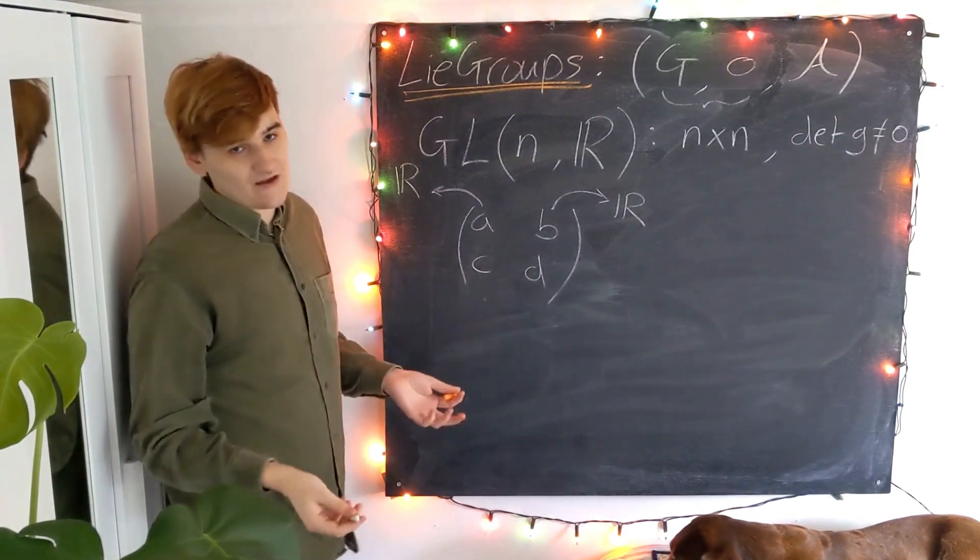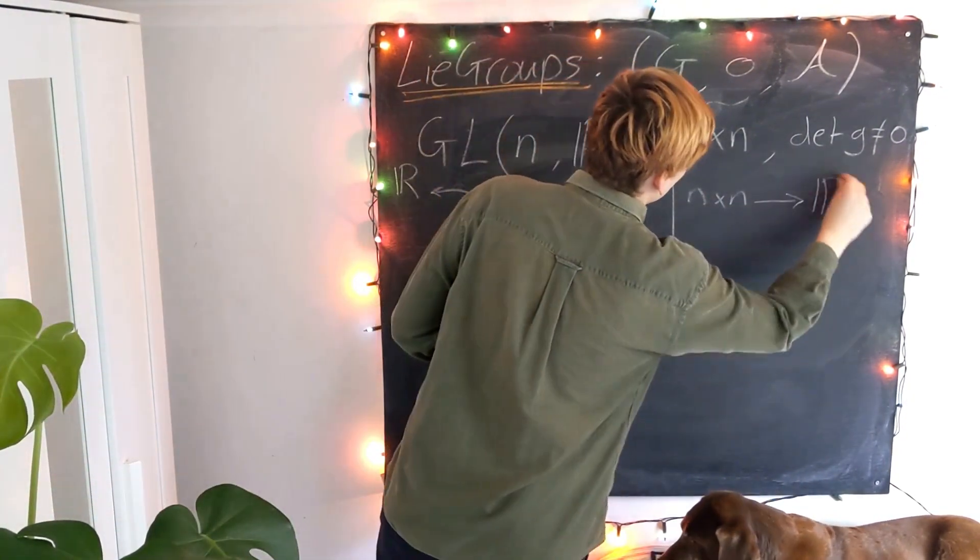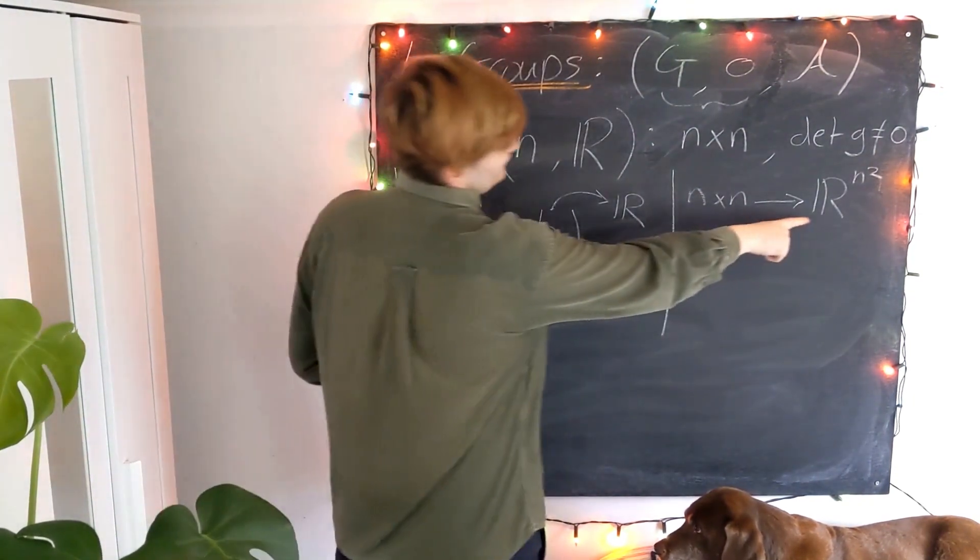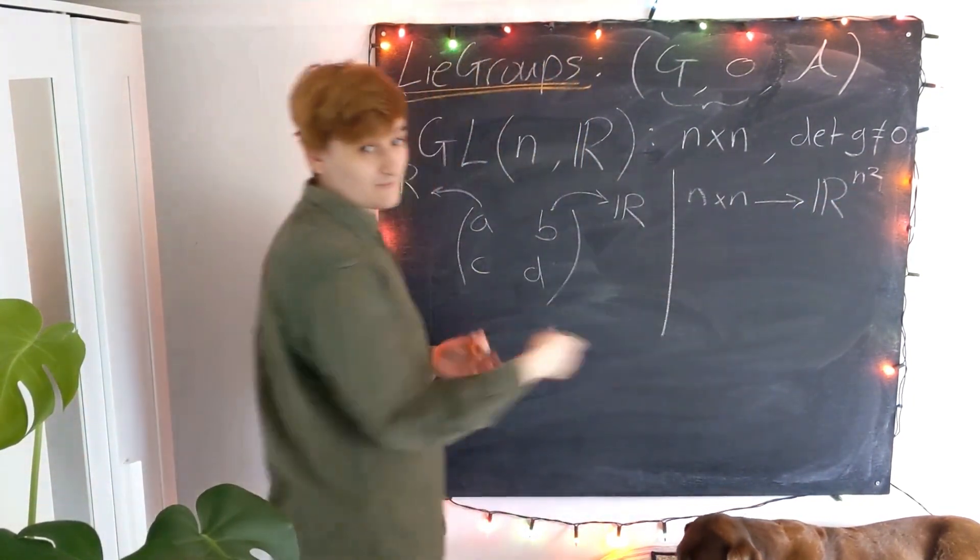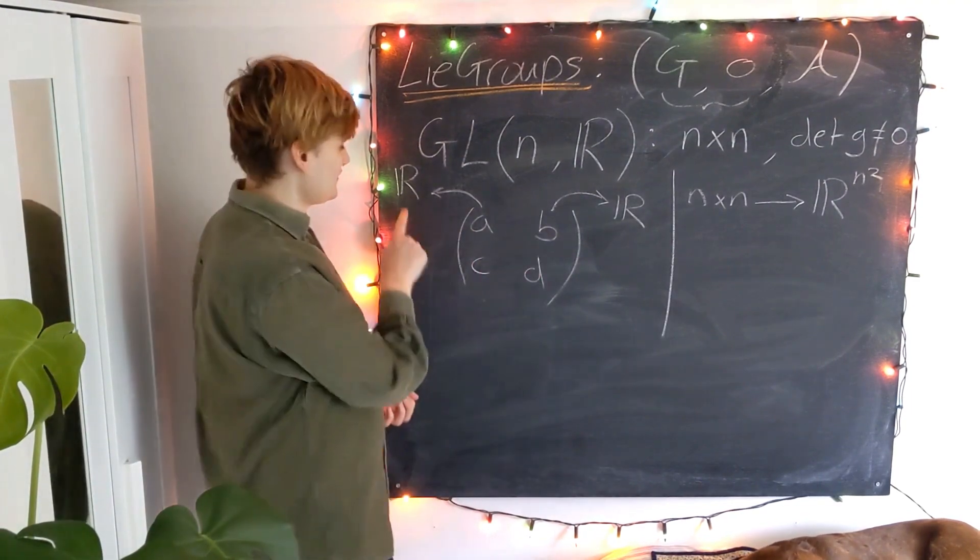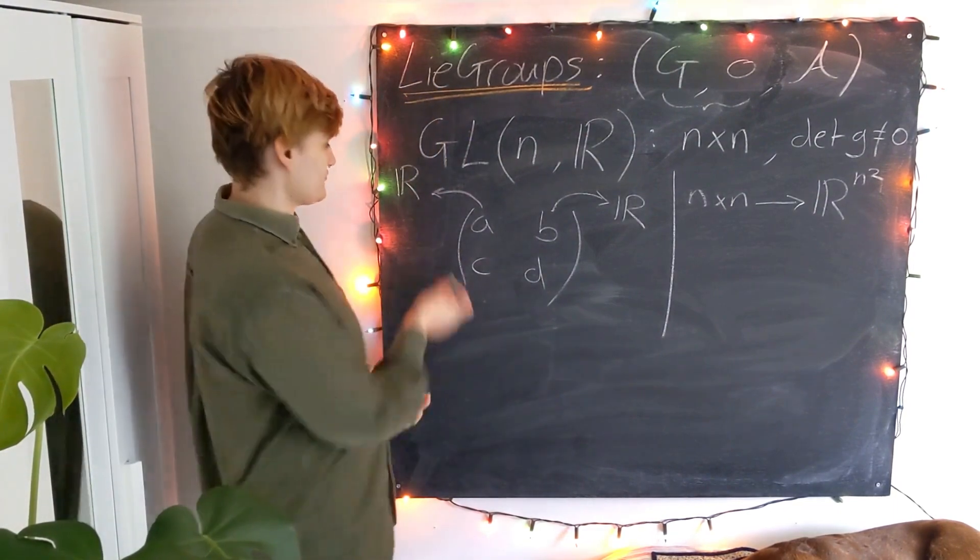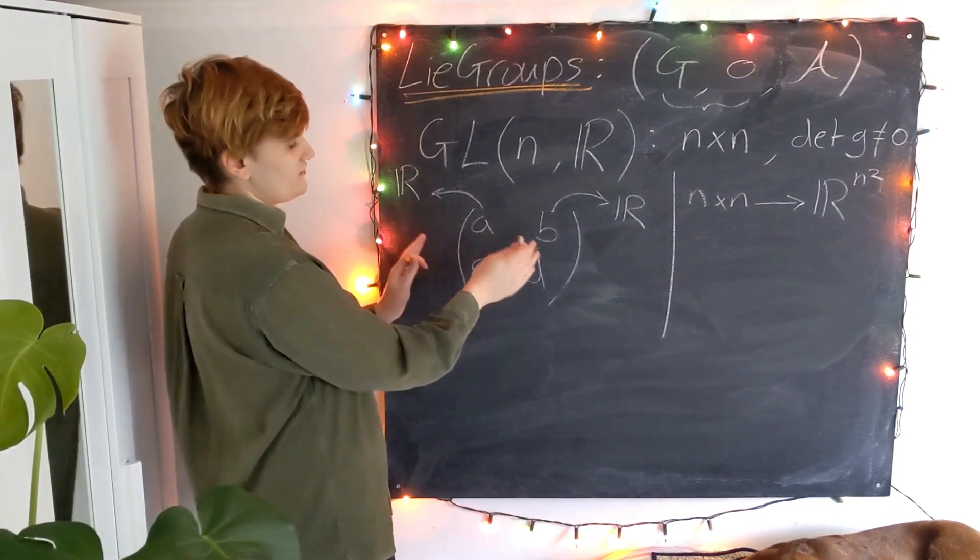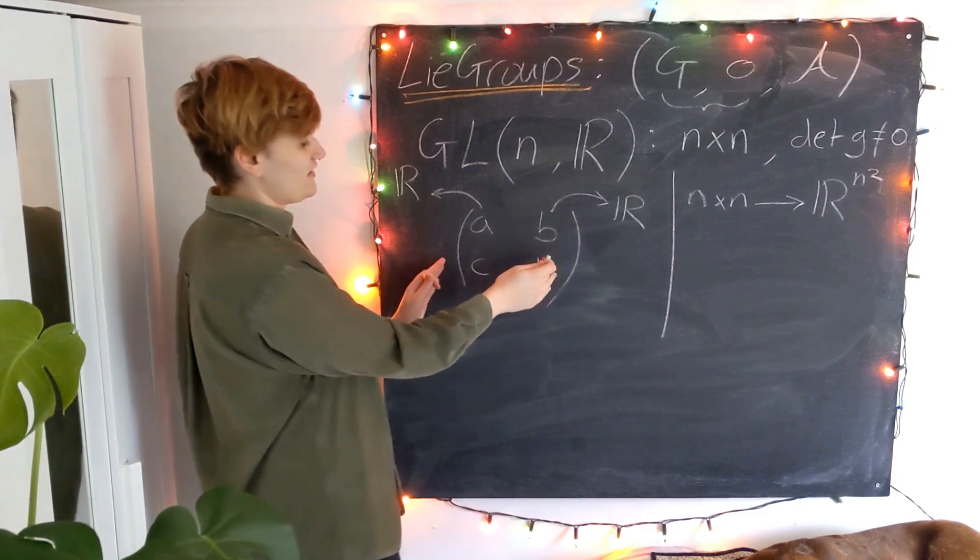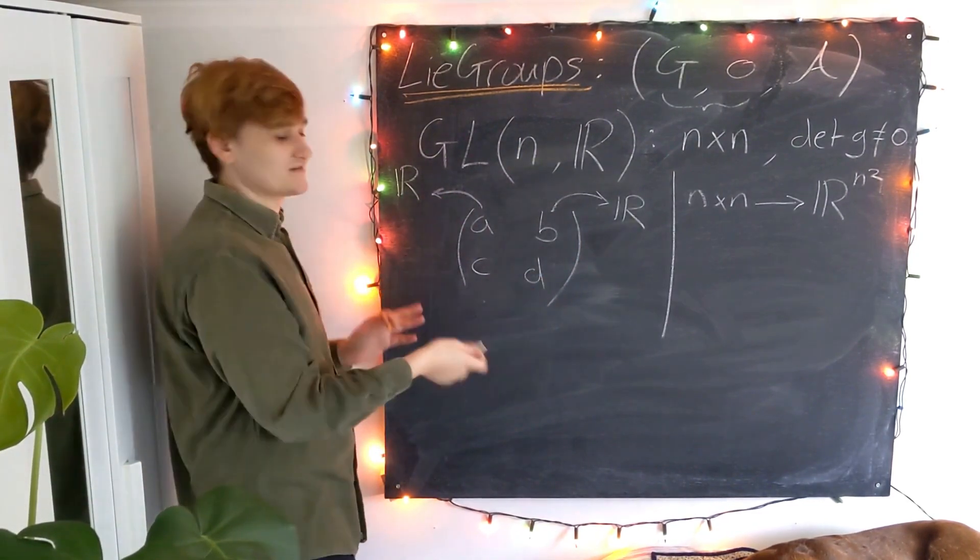So if we have an n by n matrix, that's going to map into the real numbers to the n squared power. So we can see here we have four matrix elements, effectively that's four coordinates, and these coordinates are just a map from the kind of abstract element, which is the group element, the matrix, into some concrete real number space.